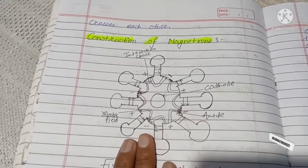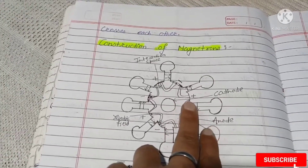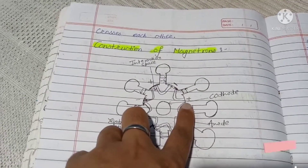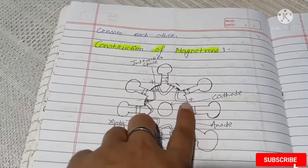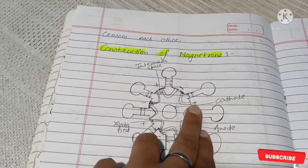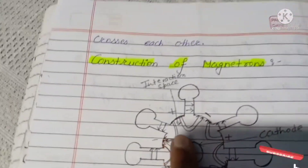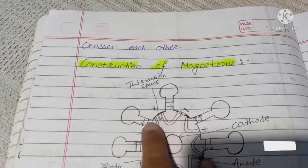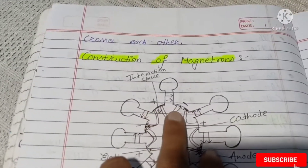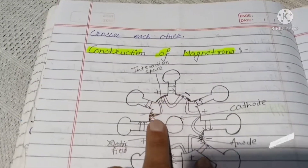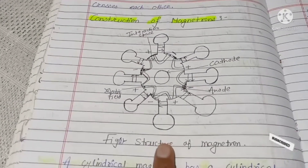Now I am going to discuss the construction of magnetron from this figure. It is around a circle, and there is a cavity. The line at the center is called the cathode, and the outer part is called the anode. The anode is positive and the cathode is negative. The space between two positive regions is called the interaction space, and it is where the electric field exists.